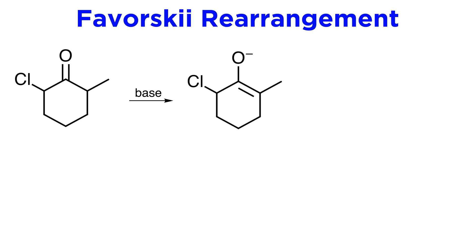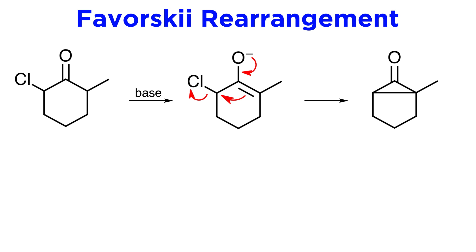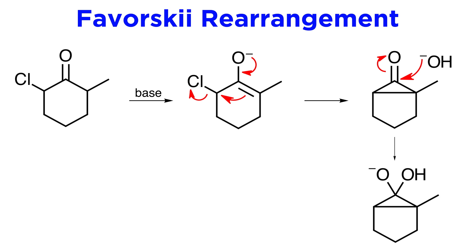To begin, we see formation of an enolate at the carbon opposite the halogen. Then the nucleophilic carbon from the enolate attacks the carbon that bears the chloro group, thus producing the very strained cyclopropanone intermediate. This is immediately attacked by the hydroxide base at the carbonyl carbon, and when these electrons come back down to reform the carbonyl, the new three-membered ring pops open, and the electrons in this bond remain with this carbon.